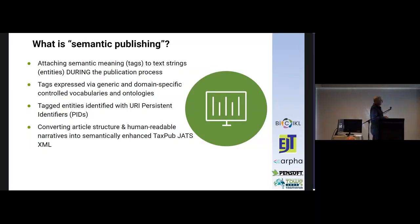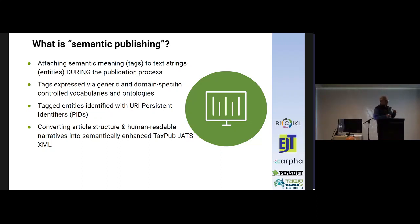So what is semantic publishing? Semantic publishing means to assign tags to some text strings, some entities in the text. Tags can be general generic terms, or can be domain-specific like, for example, Darwin Core, which is the best example of a well-known domain-specific vocabulary.